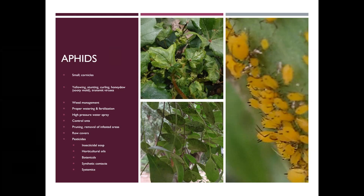Knocking aphids off can damage their exoskeleton, they can be eaten by a predator on the ground, or they might not find their way back onto the plant — so it can cut down the population. If that doesn't work, I usually will go with insecticidal soap, which works great on small soft-bodied insects like aphids. You just need to make sure you're targeting where that soap product is going — if they're on the undersurface of the leaf, target the undersurface.